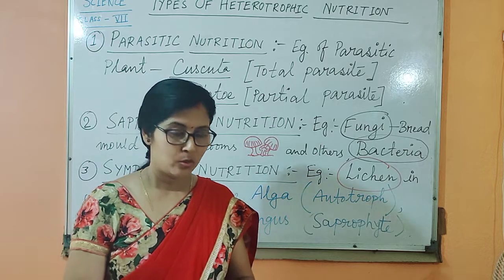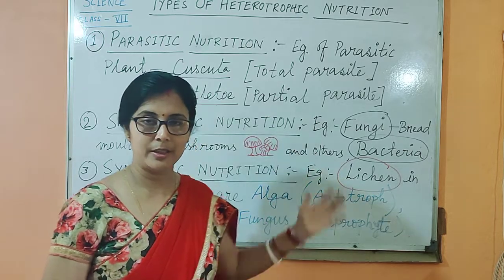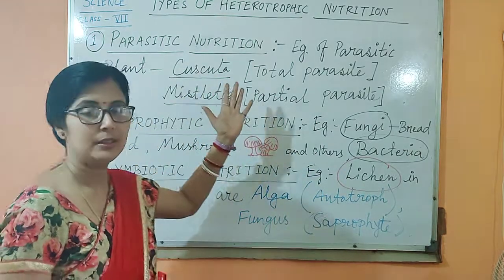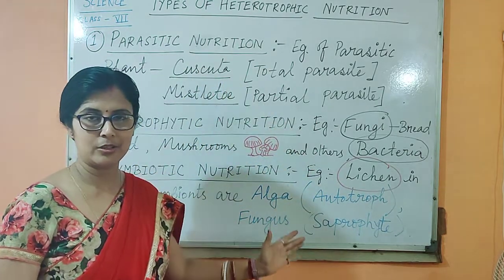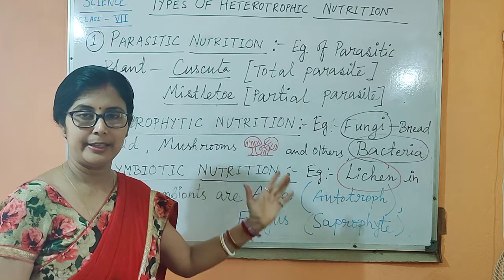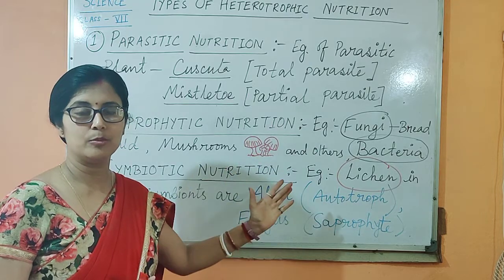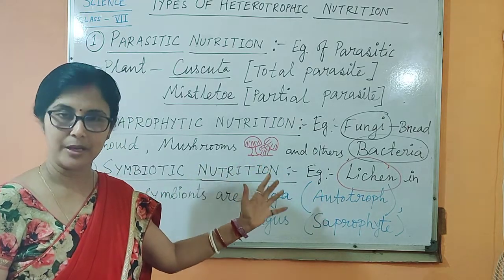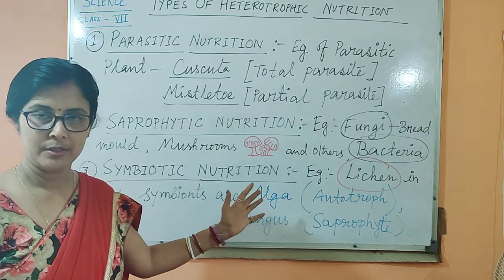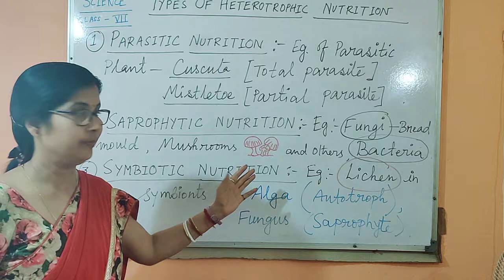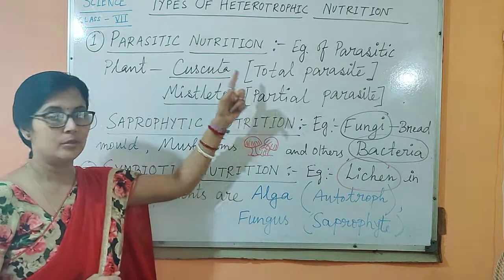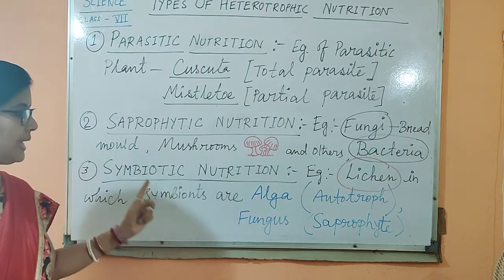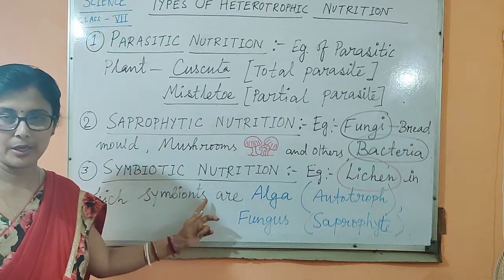So, what have we learned? We have learned three categories of heterotrophic mode of nutrition in plants, which are parasitic, saprophytic, and symbiotic.